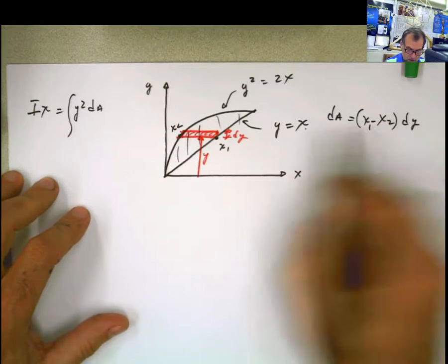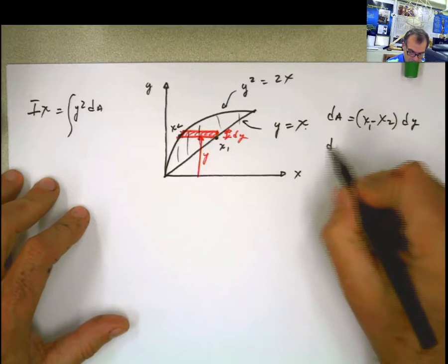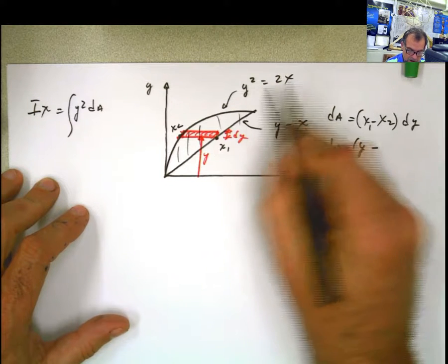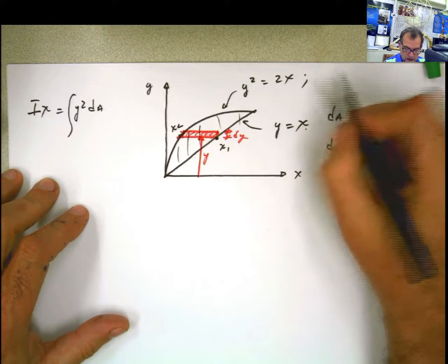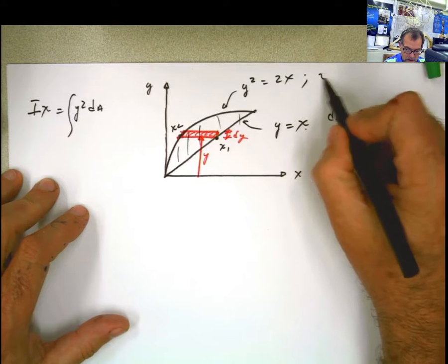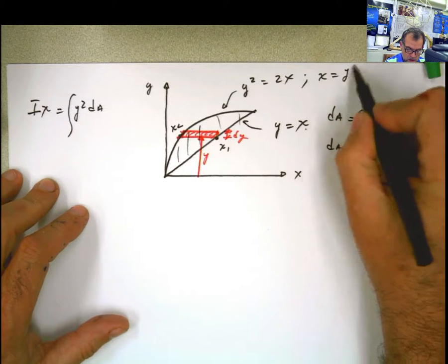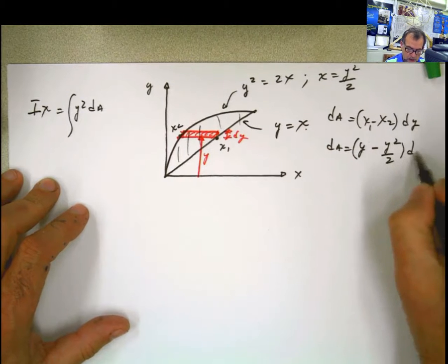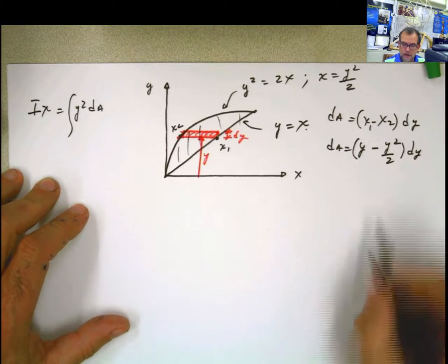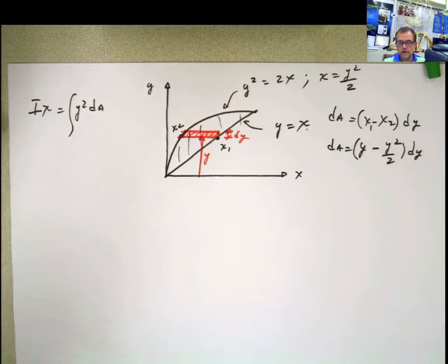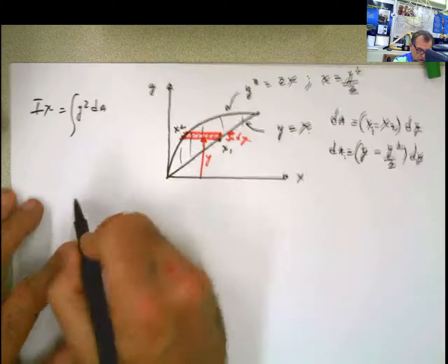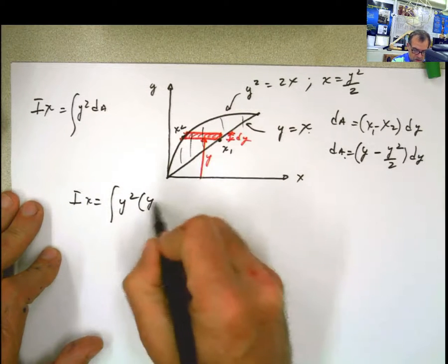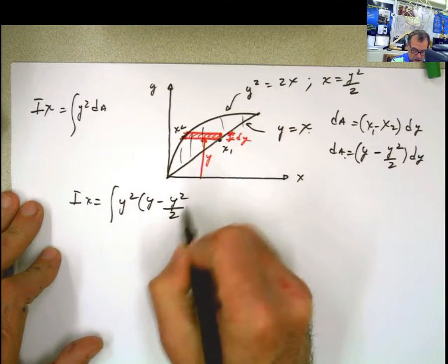What is x1? x1 is this. So my differential of area is x1 is y minus x2 is defined by this. We have to solve for x. What is x here? x equals y squared divided by 2. So we have y minus y squared divided by 2 multiplied by dy. That's our differential of area. The rest of the procedure you know it. Plug this into there and solve the equation.